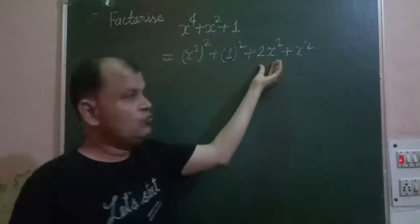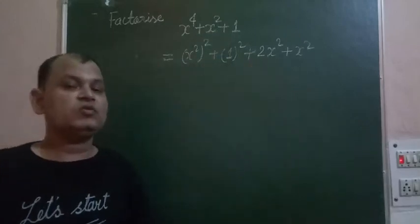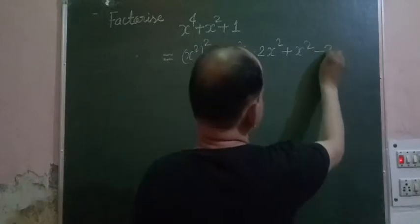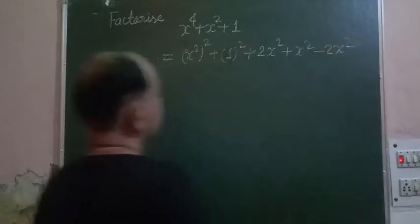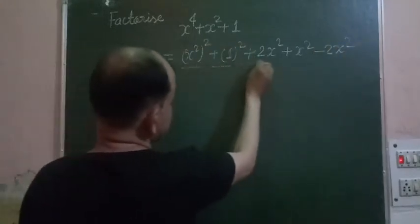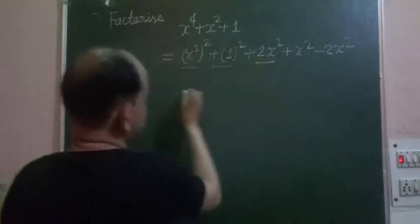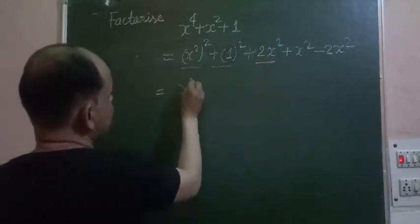So we add 2x squared and also subtract 2x squared to make it complete square. This becomes a complete whole square: x squared plus 1 to the power of 2.